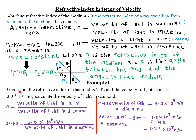Let's look at an example: given that the refractive index of diamond is 2.42 and the velocity of light in air is 3.0 × 10⁸ meters per second, calculate the velocity of light in diamond. Note that the velocity of light in air is a constant: 3.0 × 10⁸ m/s. As we shall see in Form 4 under the topic electromagnetic spectrum, all electromagnetic waves propagate with this constant velocity. So if you are not given the velocity of light in air, just use 3.0 × 10⁸ m/s; but if given a different value, stick to that value.